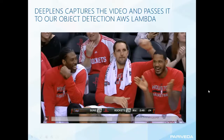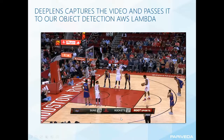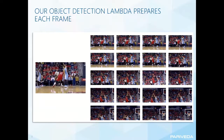First, the DeepLens captures the video feed and passes it to our object detection AWS Lambda. For instance, we would have a video of a basketball court, and the DeepLens would then pass this video feed into our first Lambda. Once the DeepLens captures the video and passes it into our object detection Lambda, it prepares each frame and splits the video up.